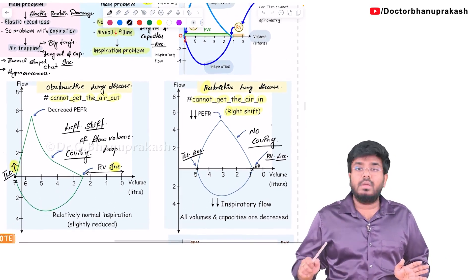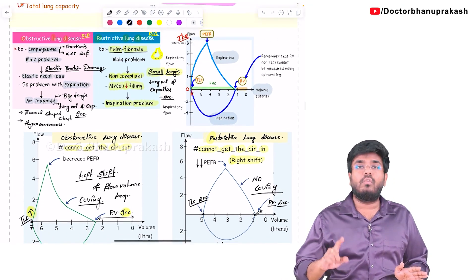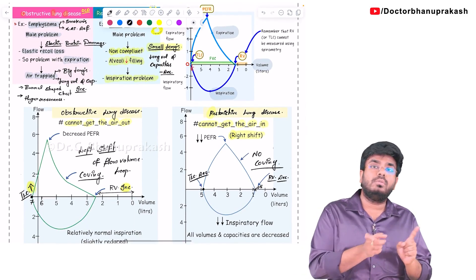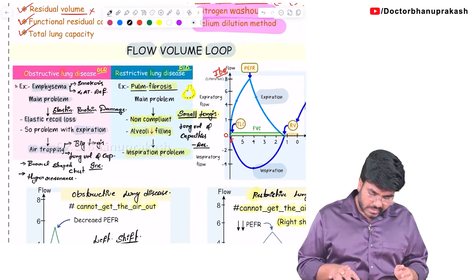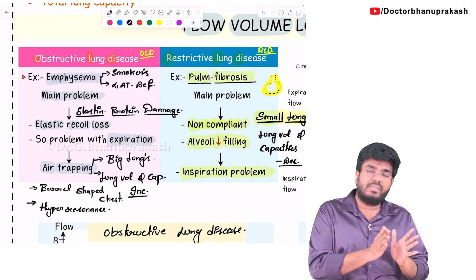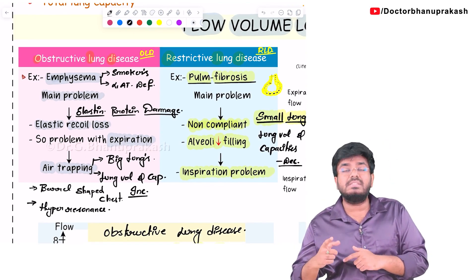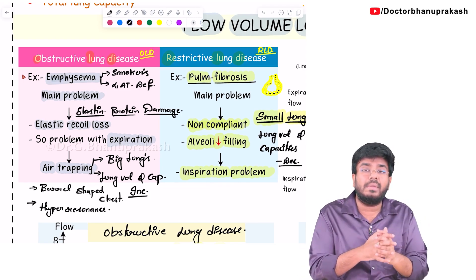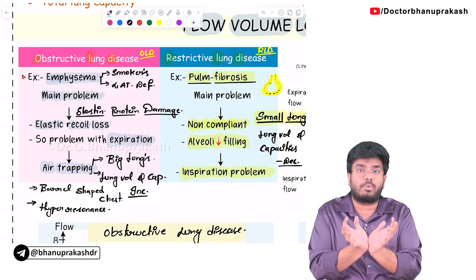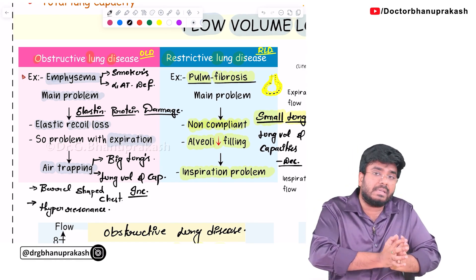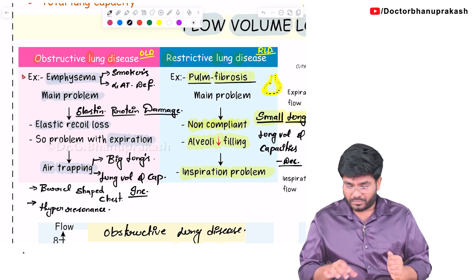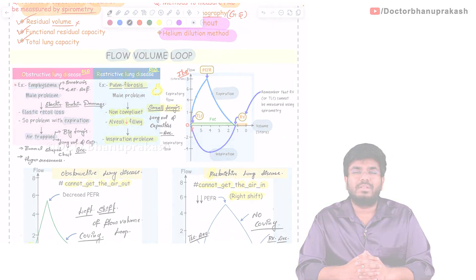So with this, we have completed the topic of flow volume loops — the normal loop and how it changes in obstructive and restrictive diseases. The key table to remember: obstructive lung disease has an expiratory problem and recoiling problem; restrictive lung disease has an inspiratory problem and compliance problem. In one, the lungs are not collapsing; in the other, the alveoli are not expanding. Hope the video is helpful. Thank you.